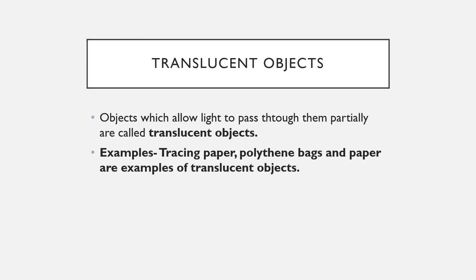Next are translucent objects. Translucent objects are those which allow light to pass through them, but not completely — only partially. Examples include tracing paper, paper with an oily patch, and polythene bags. We can see through them, but a clear image won't form. They allow some light to pass but not all, so we can only observe things dimly through them.